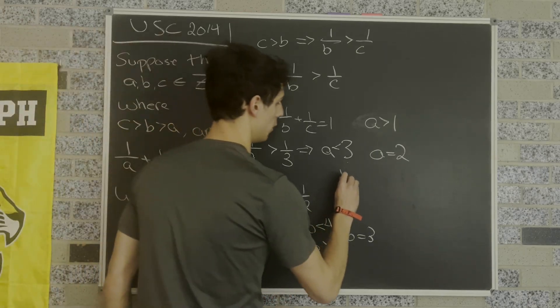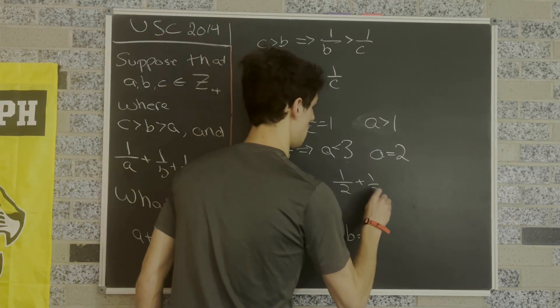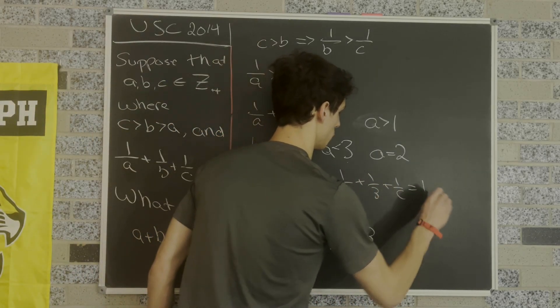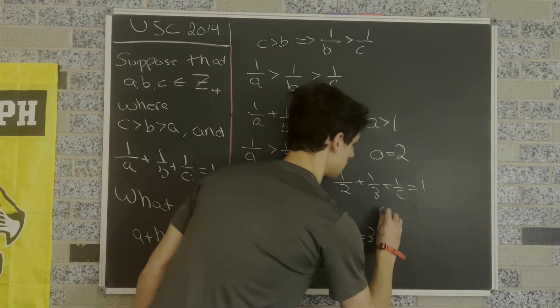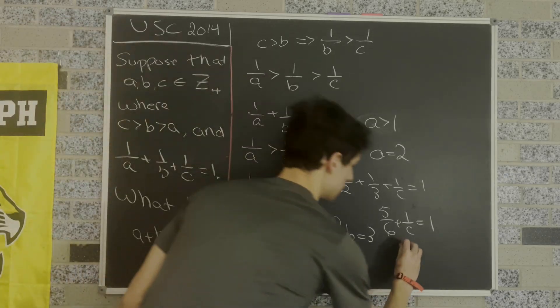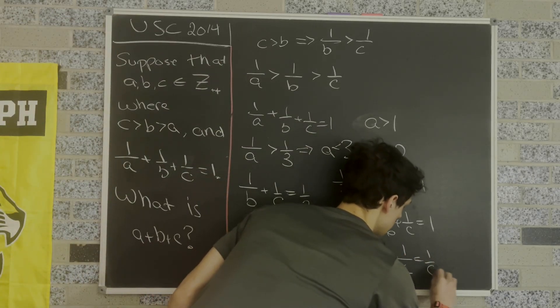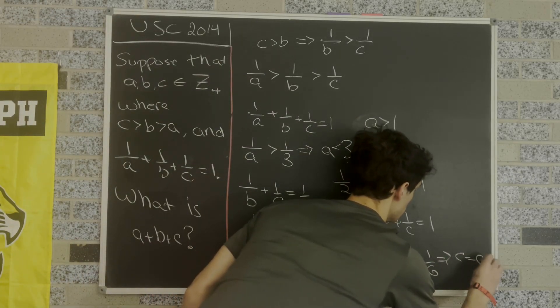Okay, we're almost done. Now we know that 1 half plus 1 third plus 1 over C equals 1, or that C equals 6.